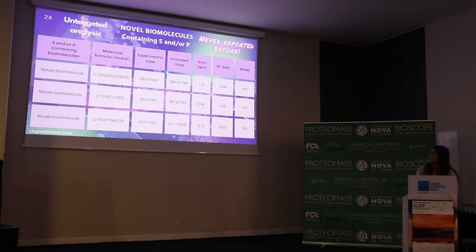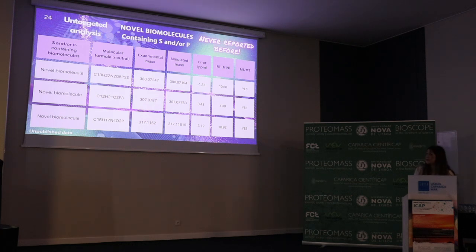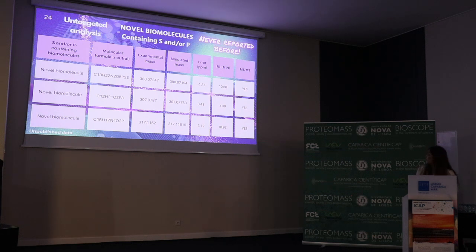Here are examples from untargeted analysis — the discovery of novel biomolecules containing sulfur and phosphorus, never reported before in the literature. Here is an example of a biomolecule containing both phosphorus and sulfur. This is unpublished data, but we confirm it with the MS2 spectra and fragment ions.